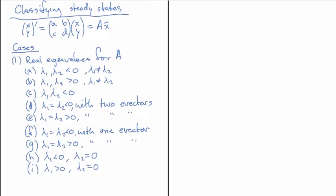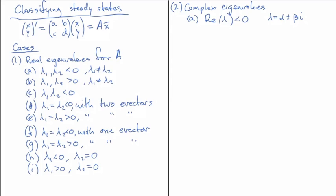The second set of cases involves complex eigenvalues, where there are fewer special sub-cases. When the eigenvalue is complex, lambda equals alpha plus or minus beta i. Case A: the real part alpha is negative. Case B: the real part of lambda is positive. Case C: the boundary case where the real part of lambda is equal to zero.